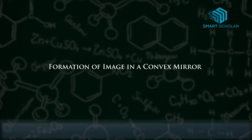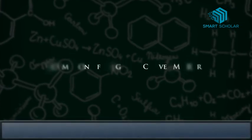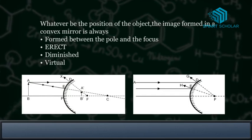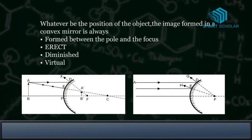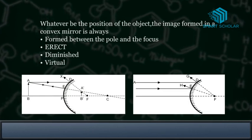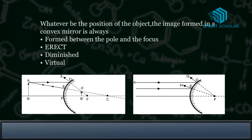Formation of image in a convex mirror. Whatever be the position of the object, the image formed in a convex mirror is always formed between the pole and the focus, erect, diminished, and virtual.